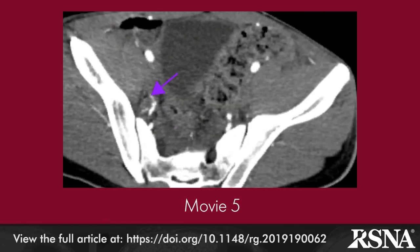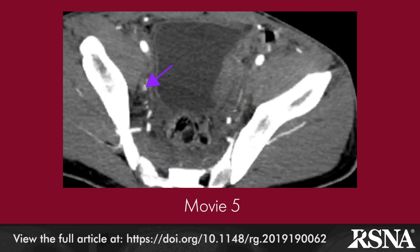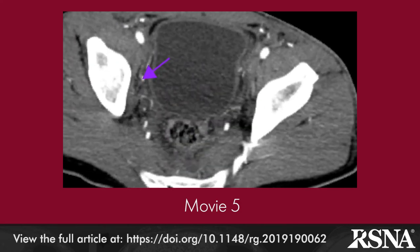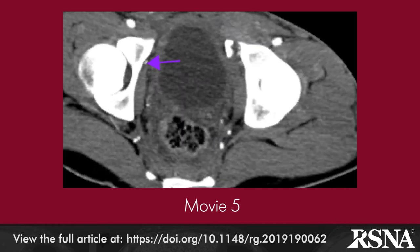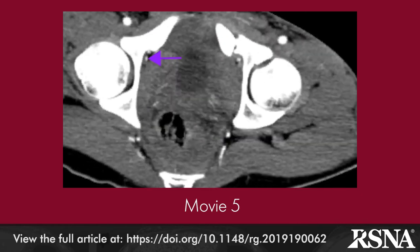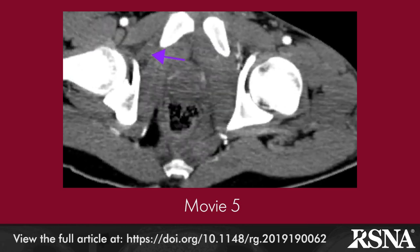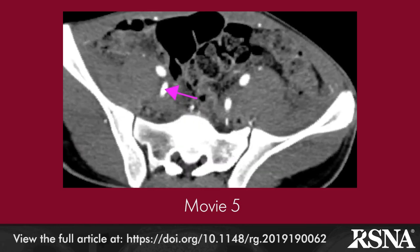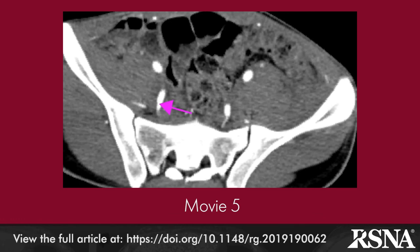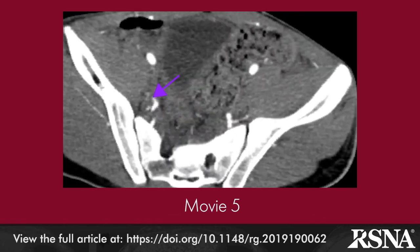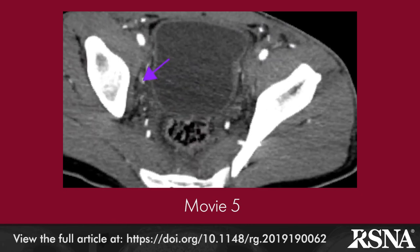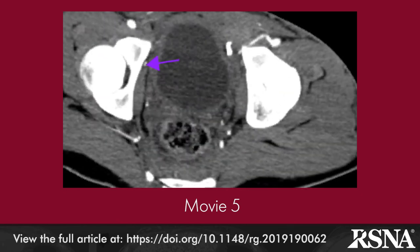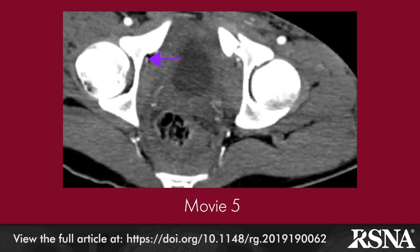Movie 5 covers the anatomy of the obturator artery. An axial maximum intensity projection pelvic CT in the craniocaudal direction in a 31-year-old man shows a colored arrow following the course of the right obturator artery, arising from the anterior division of the internal iliac artery, running in a distinct straight downward and forward trajectory along the pelvic rim, and exiting the pelvis at the upper border of the obturator foramen.